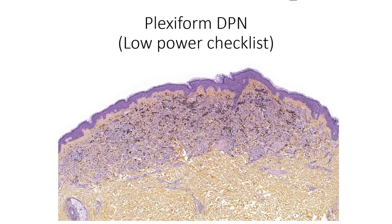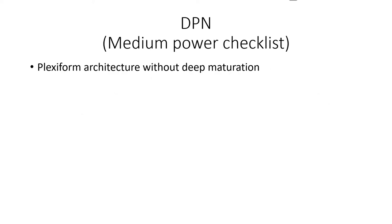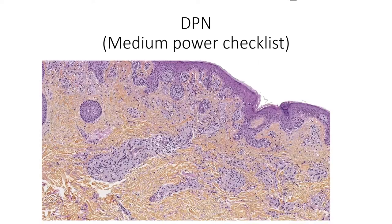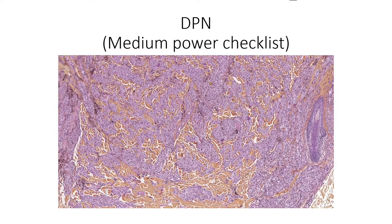For the plexiform DPN, there is no clonal aspect. You only have a horizontal plexiform architecture, and you still have the grid of melanophages. On medium power, you're only going to focus on the plexiform architecture without deep maturation. So you have fascicles here, and you'll notice they're exactly the same from top to bottom.